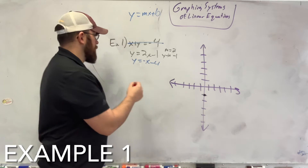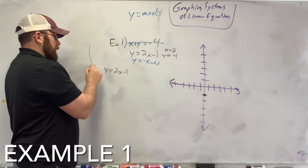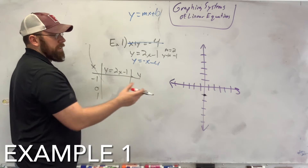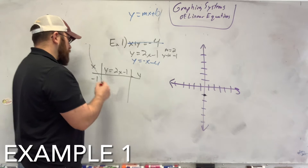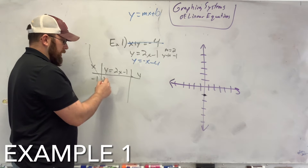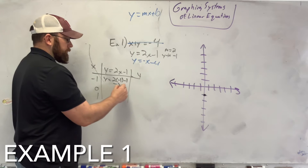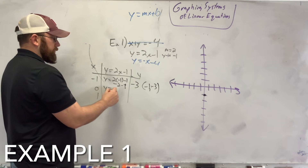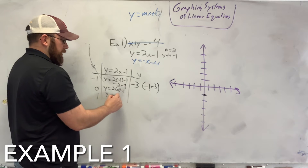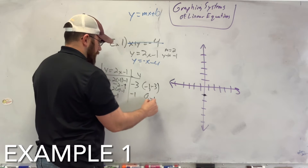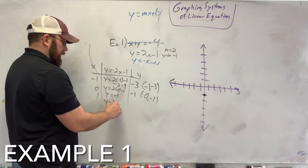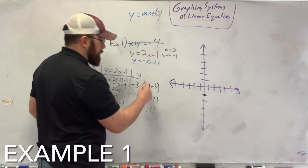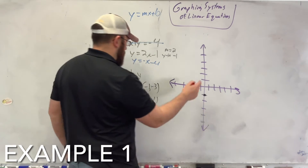If you want to plug in points, you can do that to solve it. For y equals 2x minus 1, I'll plug in x equals negative 1, 0, and 1 to get x, y points. My first point would be (negative 1, negative 3). Plugging in 0 gives y equals negative 1, so (0, negative 1). Plugging in 1 gives y equals 2 minus 1, so y equals 1, giving (1, 1). Those are my three points.